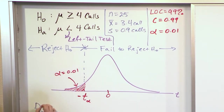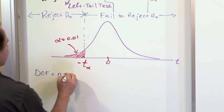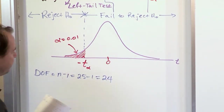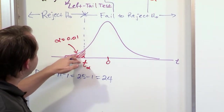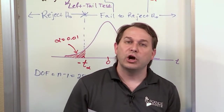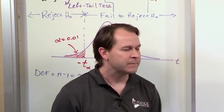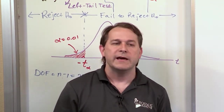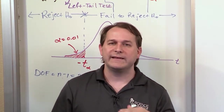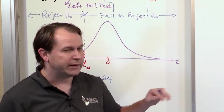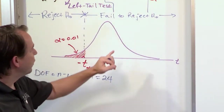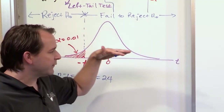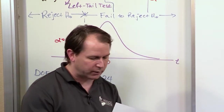First, find the degrees of freedom — that's sample size minus 1, which is 25 minus 1 = 24 degrees of freedom. The shaded area is 0.01. Go to the T-distribution table in the back of the book, go down to 24 degrees of freedom, and look for alpha = 0.01 in the top row. When you look that up, you get a number back from that table.